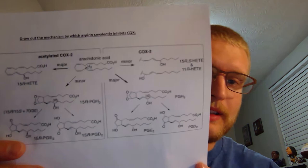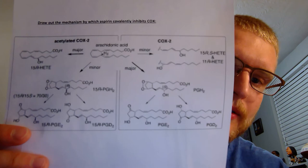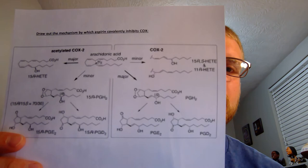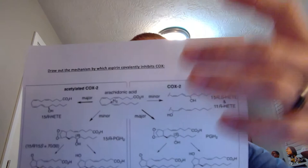This is why we use aspirin — it is that COX inhibitor and NSAID that helps control inflammation. Now for a more in-depth breakdown: here is a drawing showing the mechanism by which aspirin covalently inhibits COX. Arachidonic acid undergoes metabolism by PGH synthase — also referred to as the cyclooxygenase COX enzyme. We have acetylated COX-2 and COX-2 shown here, and PGH synthase forms the prostaglandins which play a very important role in inflammation and pain.